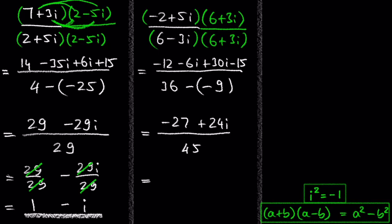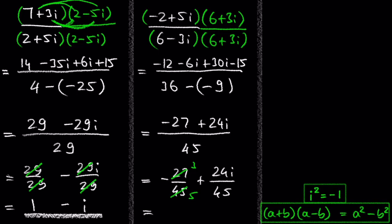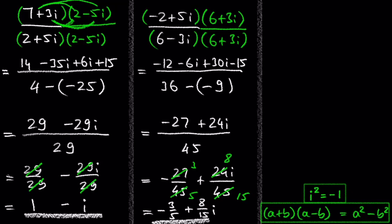We can split the fraction to negative 27 over 45 plus 24i over 45. Simplifying: 27 divided by 9 is 3 and 45 divided by 9 is 5; 24 divided by 3 is 8 and 45 divided by 3 is 15. So we get negative 3 over 5 plus 8 over 15i, and we are done. Notice that we expressed the solution in standard form.